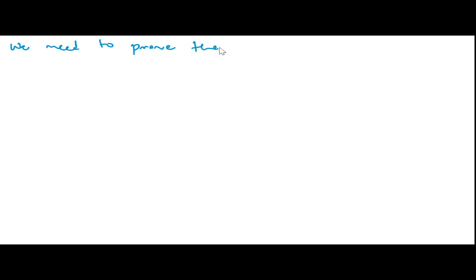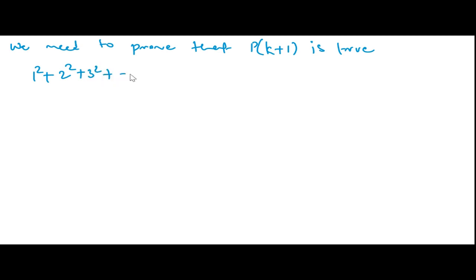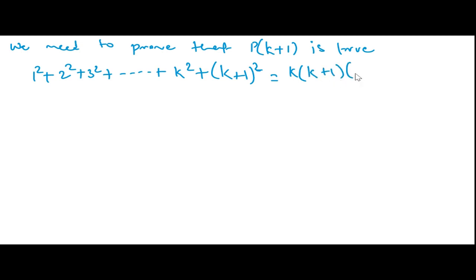Once we have that, we need to prove that the statement P(n) is true for n = k+1. So we write: 1² + 2² + 3² + ... + k² + (k+1)², and the sum up to k² can be substituted using equation 1, giving k(k+1)(2k+1)/6 + (k+1)².